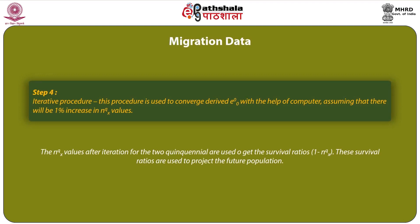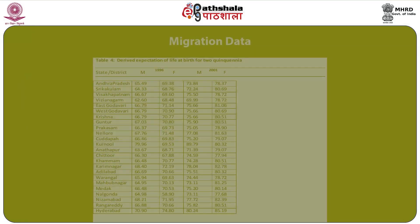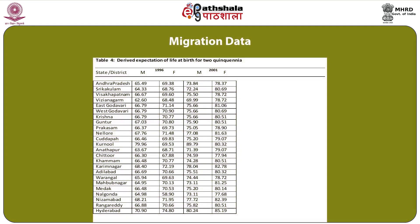The iterative procedure is used to converge the derived life expectancy at birth (E₀₀) with the help of a computer, assuming a 1% increase in N_qx values. The N_qx values after iteration for the two quinquennia are used to get the survival ratios, that is (1 − N_qx). These survival ratios are used to project the future population, and the table presents district-wise male and female population over a period of time in detail.